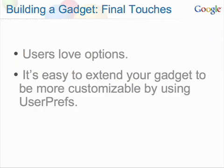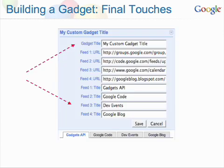Now you can put the final touches on the gadget. The more customizable it is, the better. When deciding what to add, just keep in mind the features you would like to have if you were using this gadget. For instance, you might want the ability to change the titles, tab labels, and number of feed entries to display.